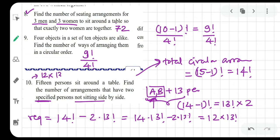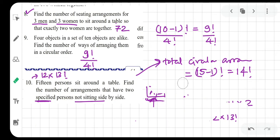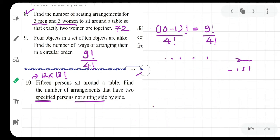14 factorial, that is 14 into 13 factorial, minus 2 into 13 factorial, which is simply 12 into 13 factorial. So our answer for the 10th question is 12 into 13 factorial. Now is there another way of doing this? I think we can do this other way. Let me tell you.